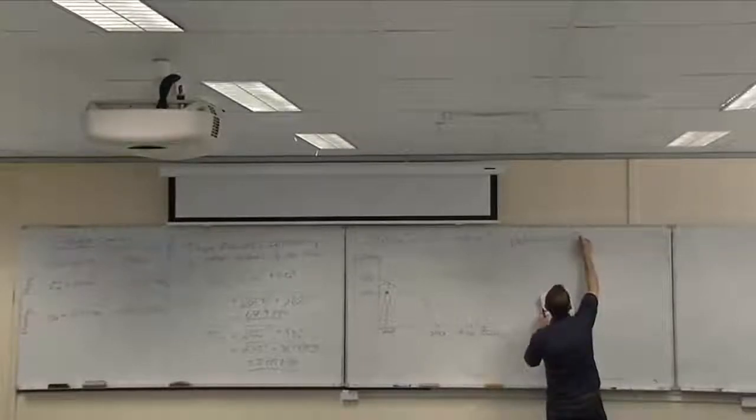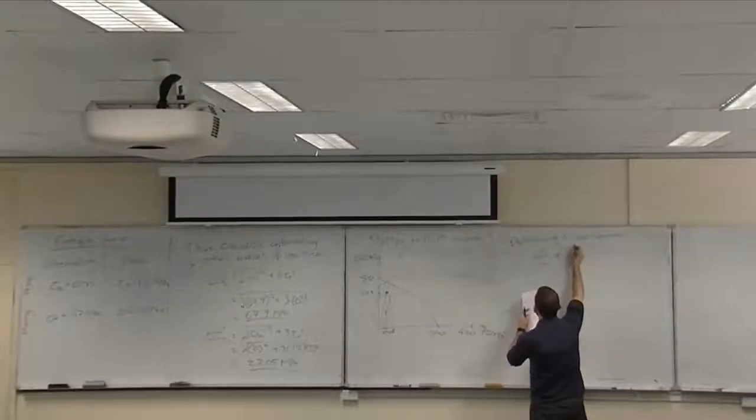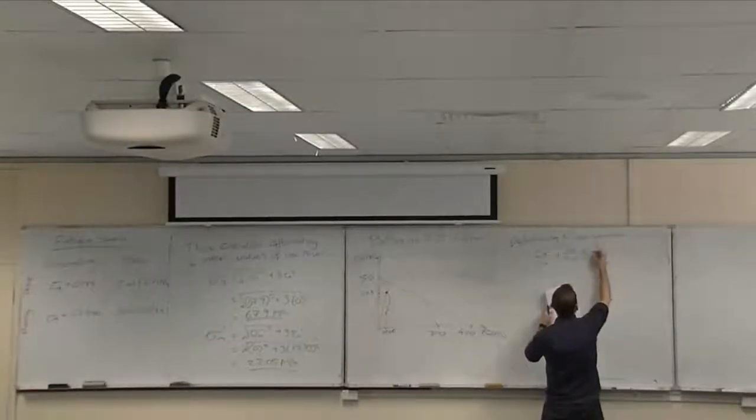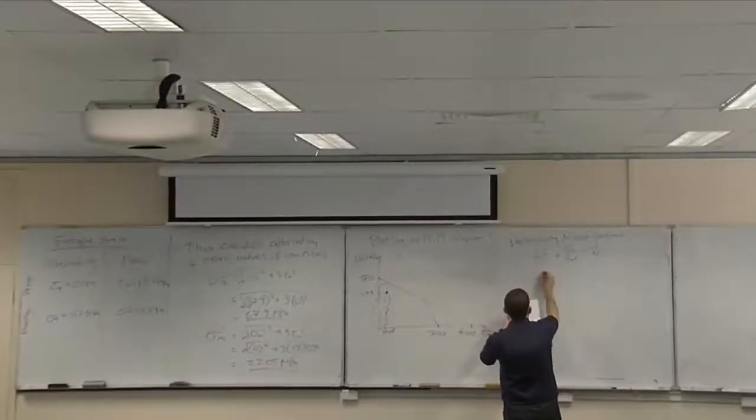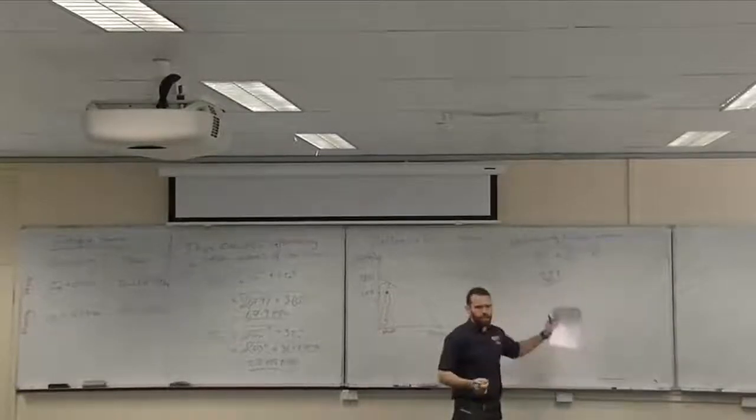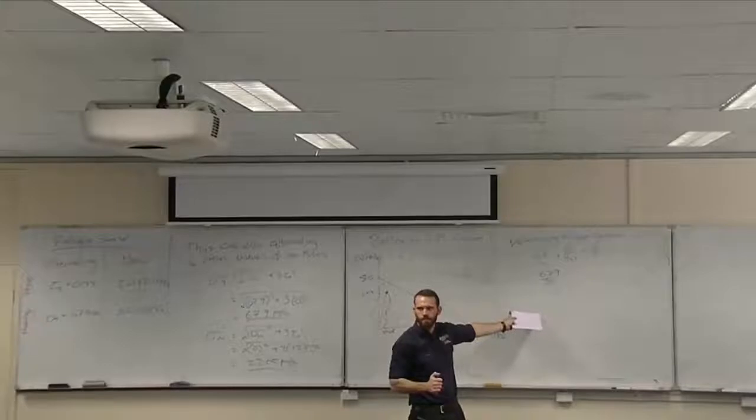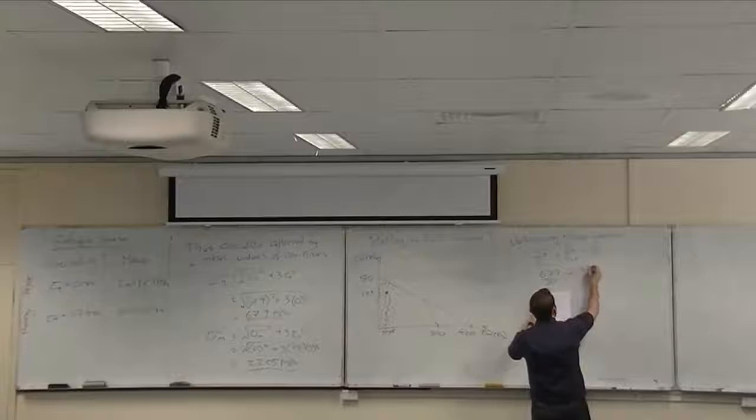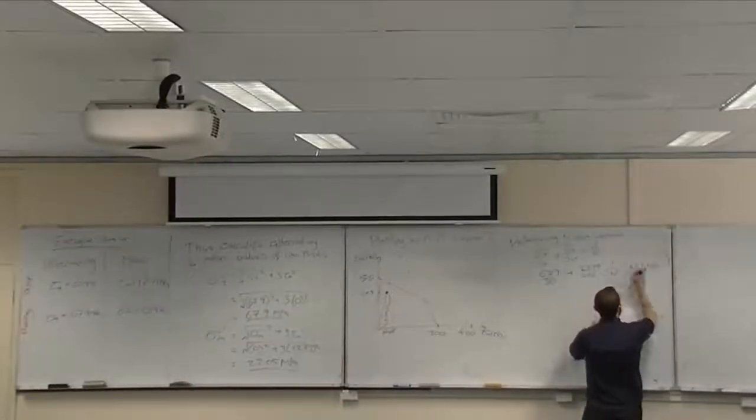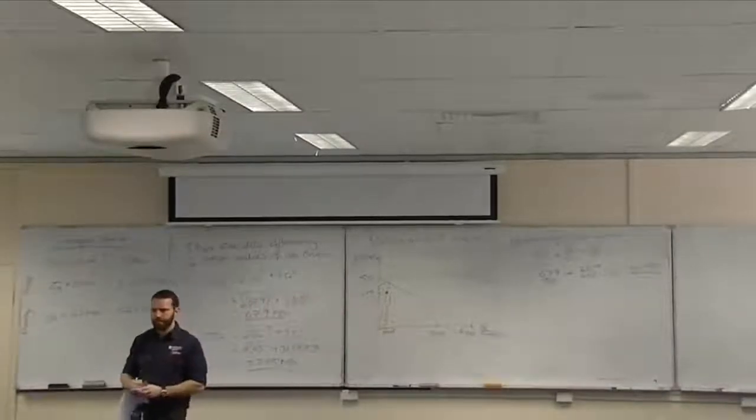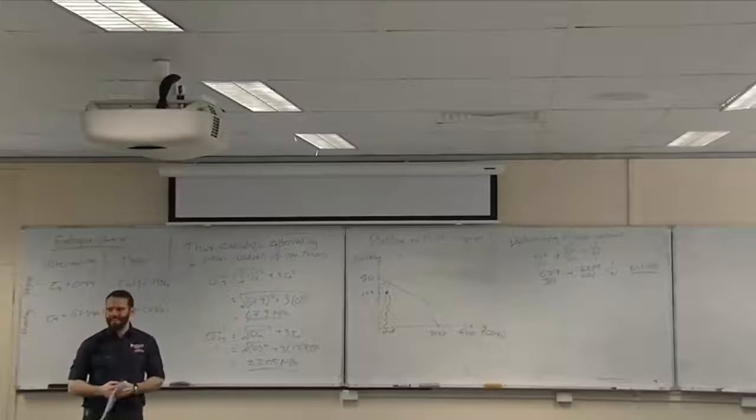So determining n from Goodman. Our equation is sigma a on sn plus sigma m on s-u-t equals one on n. Therefore 67.9 on 80, and I can work in this because everything's megapascals. Plus 22.05 on 400 equals one on n, and I rearrange that to get n equals 1.106. Does that largely agree with where I've put that line, aside from the fact that I drew it poorly? Greater than one means we're inside. Conceivably, we're relatively close to the line, which is what n's telling us.